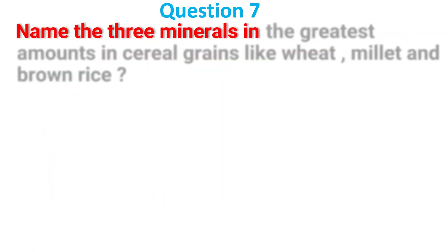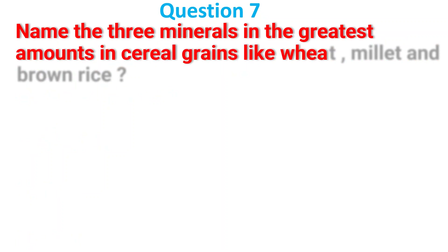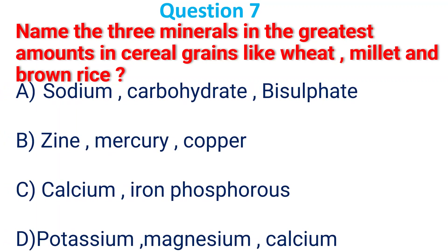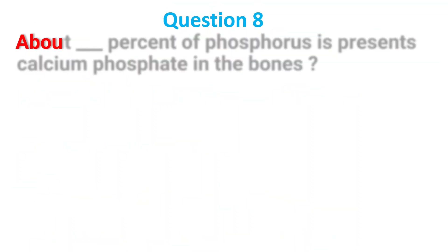Name the three minerals found in the greatest amount in cereal grains like wheat, millet, and brown rice. A. Sodium, carbohydrate, dysulfate; B. Zinc, mercury, copper; C. Calcium, iron, phosphorus; D. Potassium, magnesium, calcium. The answer is C, calcium, iron, phosphorus.